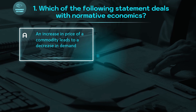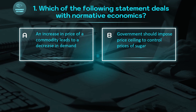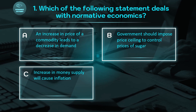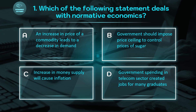The question is: which statement belongs to normative economics? The first statement says that when prices increase, quantity demanded decreases. The second option is: government should impose a price ceiling to control prices of sugar — meaning the government should place restrictions so that sugar prices do not rise. The third option is: an increase in money supply will cause inflation — when money supply increases, the price level increases and inflation occurs. The fourth option is: government spending in the telecom sector created jobs for many graduates.